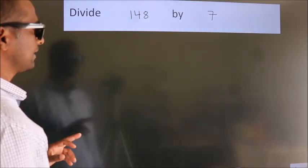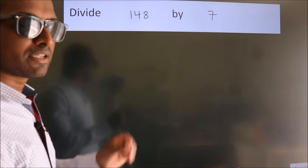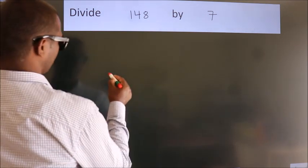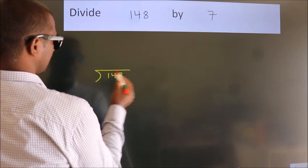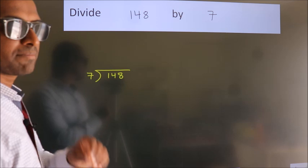Divide 148 by 7. To do this division, we should frame it in this way: 148 here, 7 here. This is your step 1.